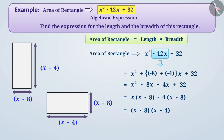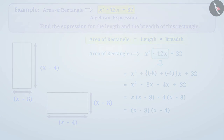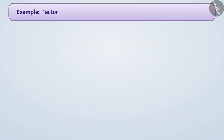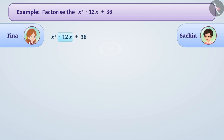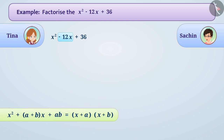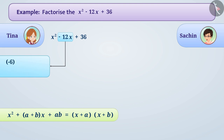Now let us understand an interesting thing related to factorization of algebraic expressions with an example. A teacher asked students to factorize a given expression. Tina and Sachin solved it using two different methods. Tina used the middle term splitting identity. She found two numbers a and b to split -12x such that ab = 36 and a + b = -12. Since (-6) × (-6) = 36 and (-6) + (-6) = -12, she chose -6 and -6.